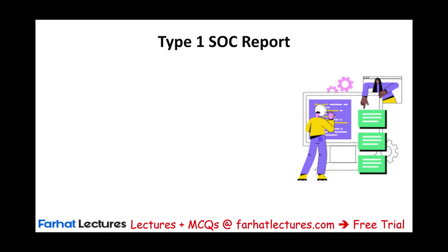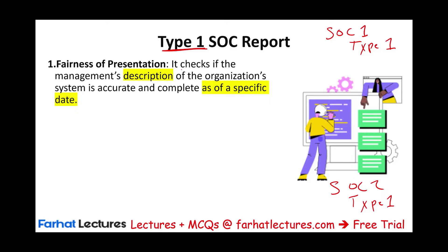So what would a Type 1 SOC report include? We could have Type 1 under SOC 1 and Type 1 under SOC 2. Generally, a Type 1 report checks the fairness of presentation — it checks if management's description of the organization's system is accurate and complete as of a specific date. The key thing to know is that Type 1 deals with a snapshot — a specific date. Think of it like a balance sheet, which is as of a specific date.